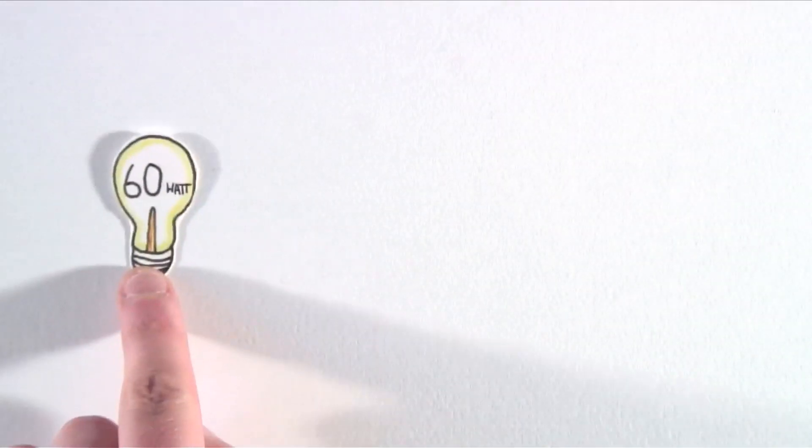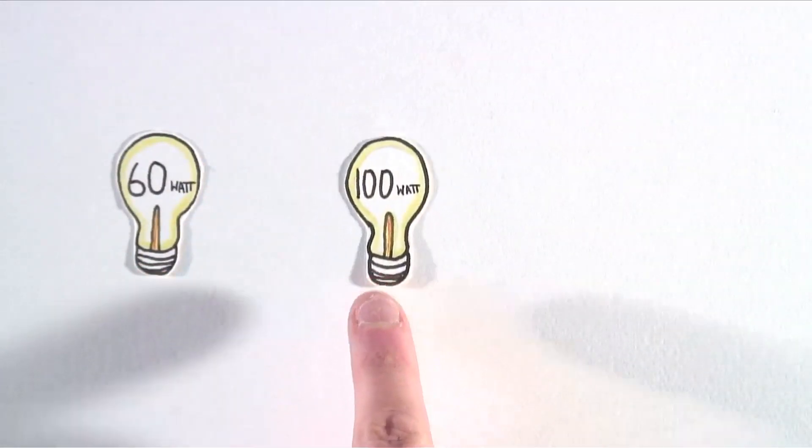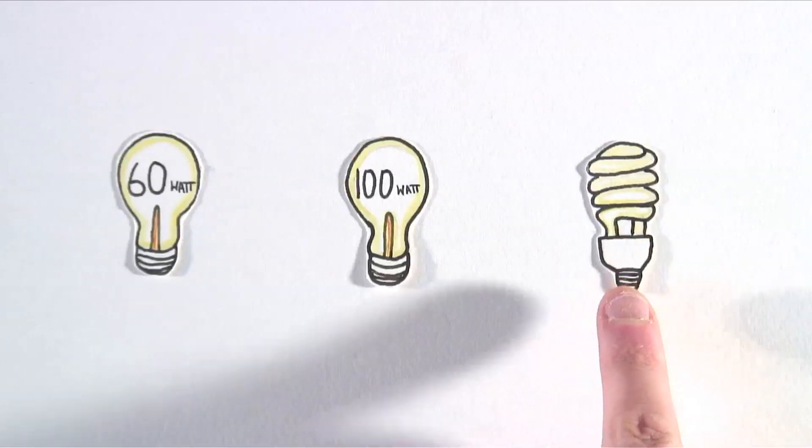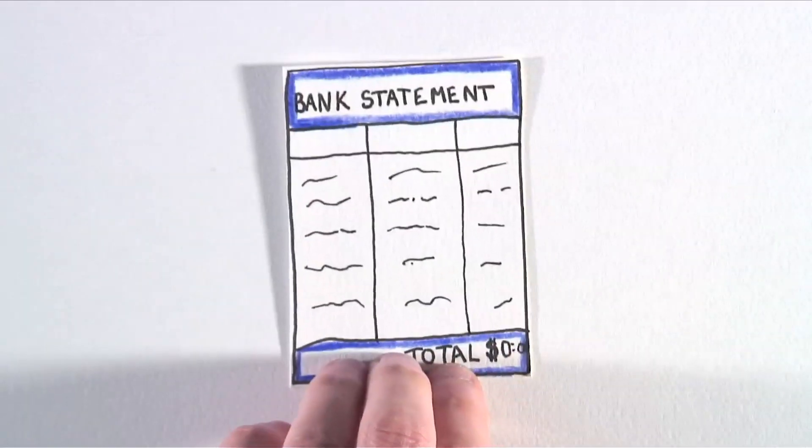Inside your home, what kind of bulbs do you have? 60 watt, 100 watt, incandescent, or CFL? Do you know what effect they have on your bank balance?